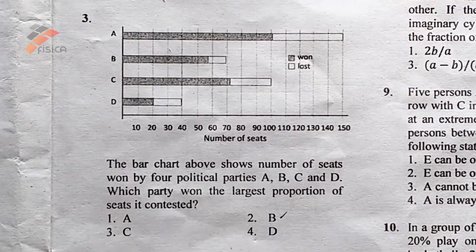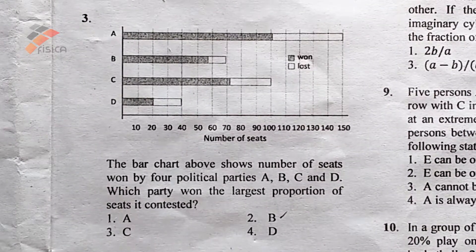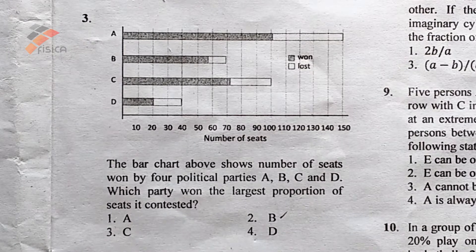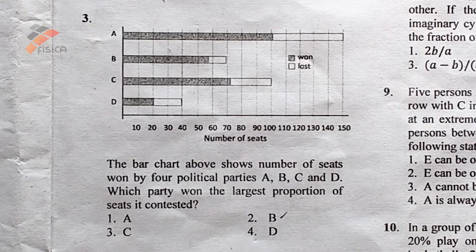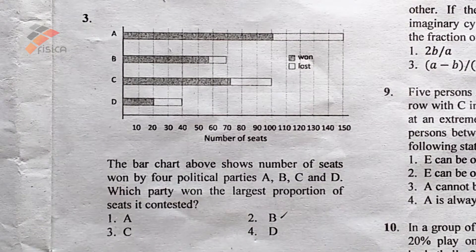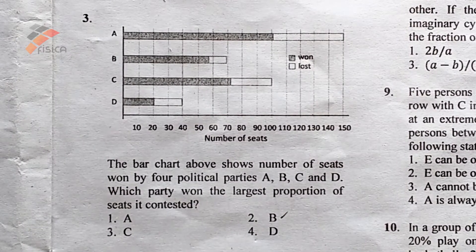The third question is: the bar chart above shows the number of seats won by four political parties A, B, C and D. Which party won the largest proportion of seats it contested?